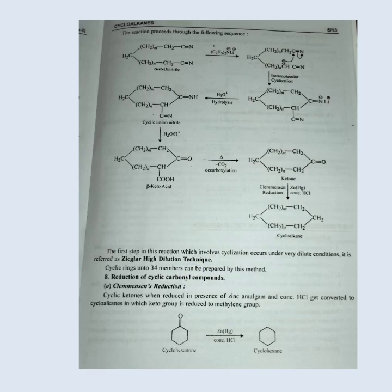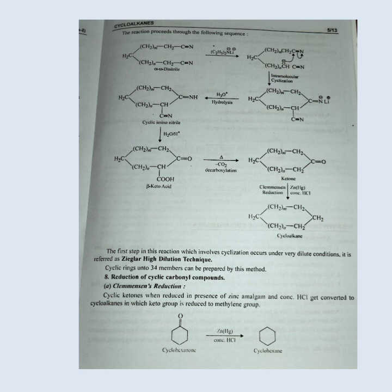The first step of this reaction, which involves cyclization, occurs under very dilute conditions. It is referred to as the Ziegler high dilution technique. Cyclic rings up to 34 members can be prepared by this method.